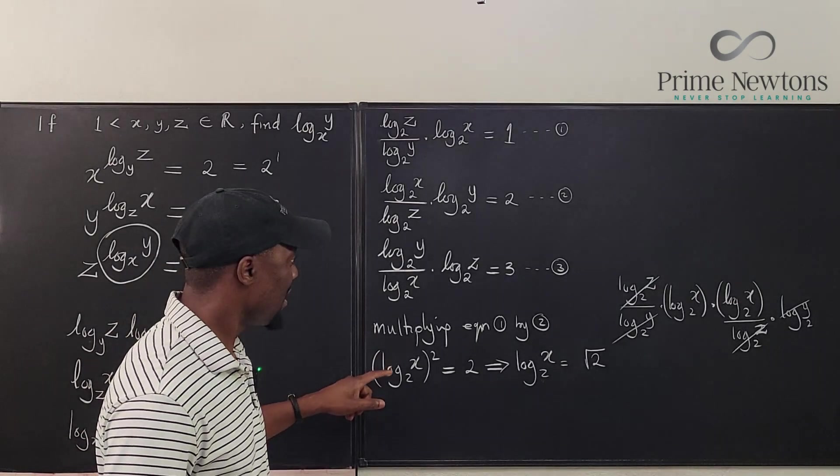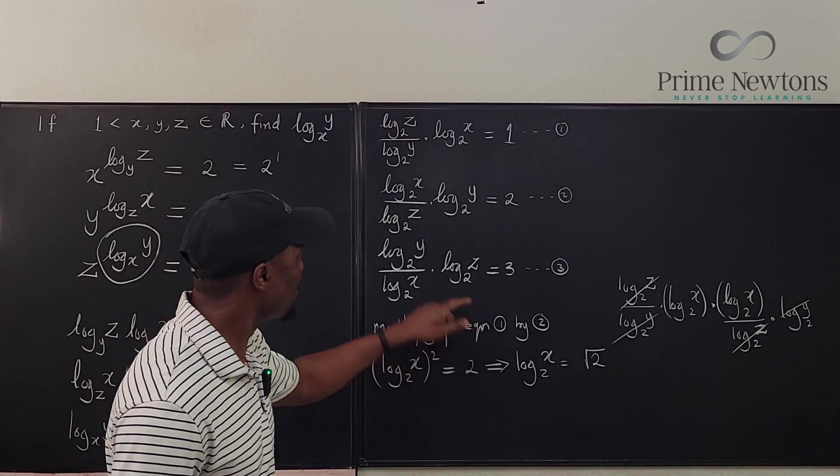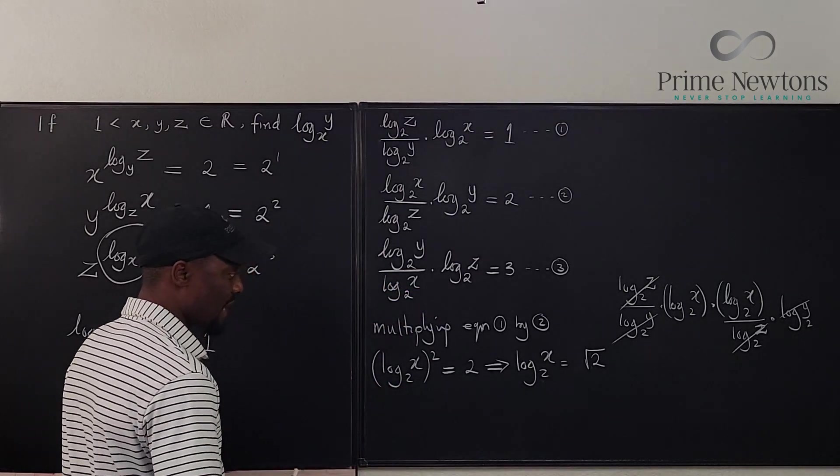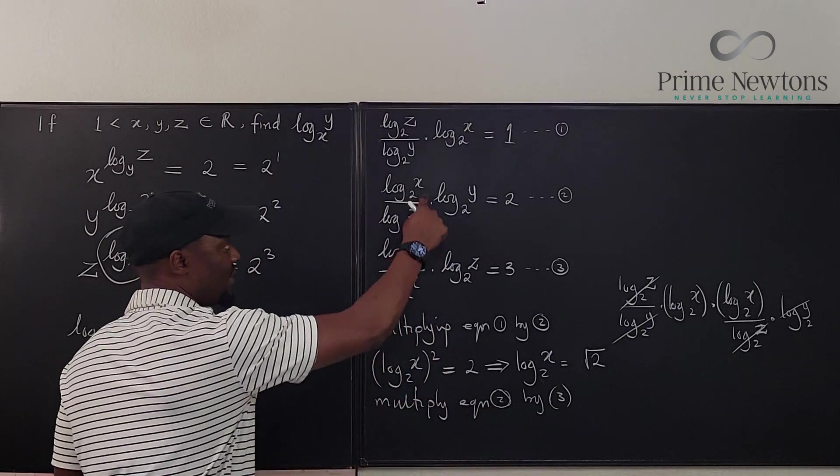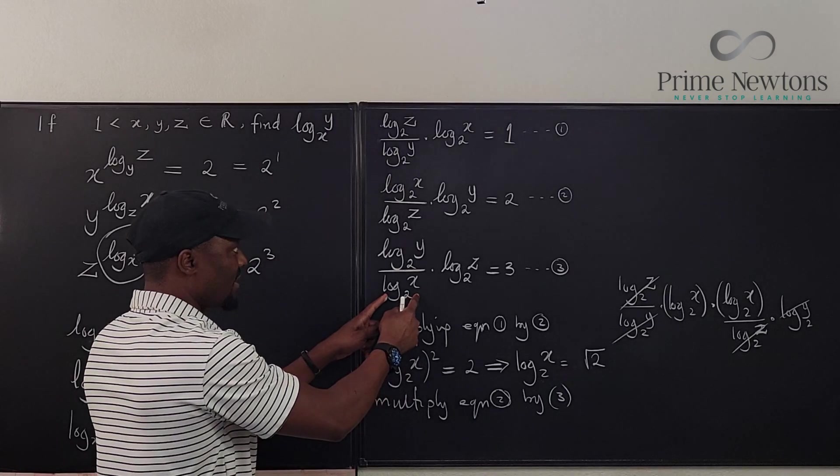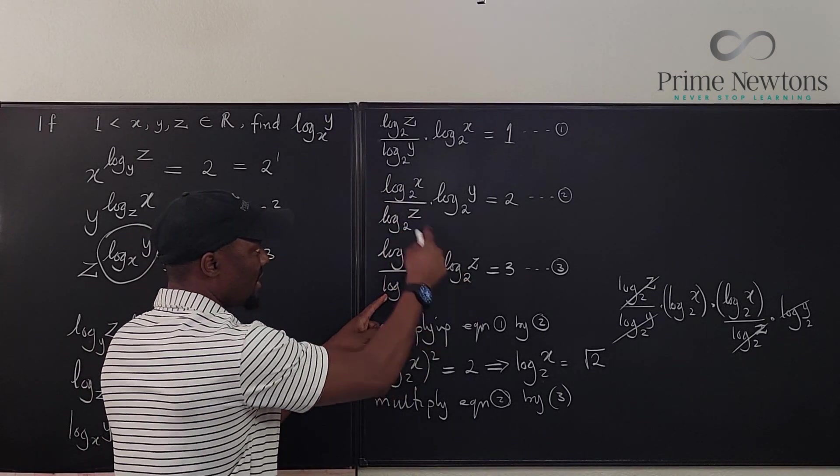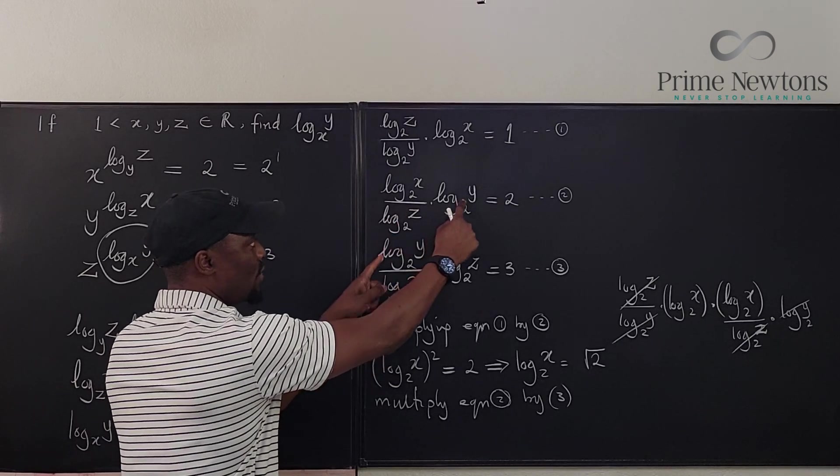So what we can do is repeat the same thing we just did here. We're going to say that if we multiply equation two by three, see what's going to happen. So if we multiply these two together, we know that this is going to cancel this out.